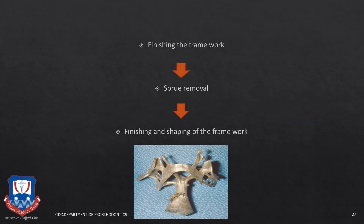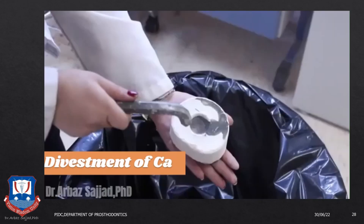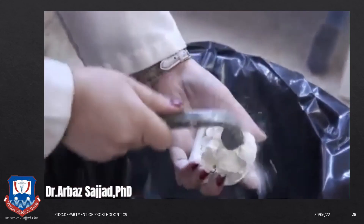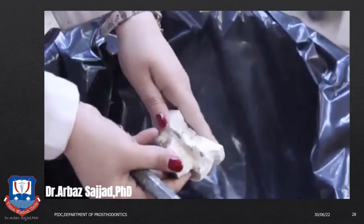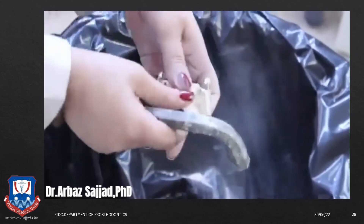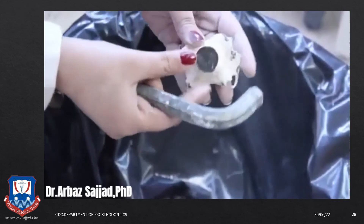Once the framework is cooled down, it is divested, retrieved, the sprues are cut, and the framework is finished. The retrieved framework after divesting still has sprues attached to it along with the reservoir. At the appropriate time, the outer layer of the refractory material is removed by tapping it with a mallet. The resulting investment is then removed by airborne particle abrasion in a self-contained machine. Subsequently the casting is examined for defects; if the casting is deemed satisfactory, finishing and fitting procedures are begun.